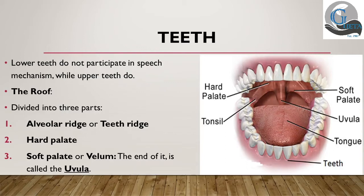The roof of the mouth can be divided into three parts, beginning from outside towards the inside. The first part, against the upper teeth, is called the alveolar ridge or the teeth ridge. The second part, the hard portion in the middle of the roof — you can feel it — is called the hard palate. The third part, at the back, the softer part, is known as the soft palate or the velum. The end of the soft palate is known as the uvula.